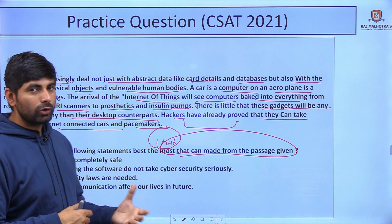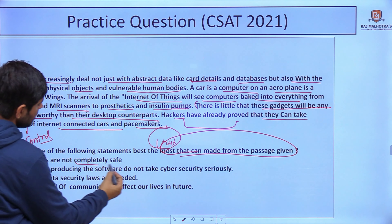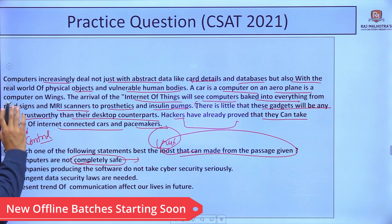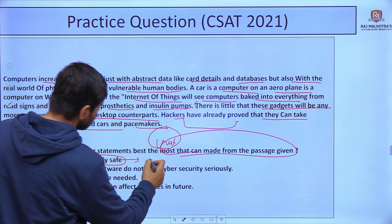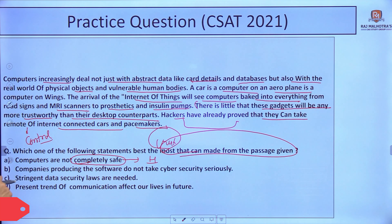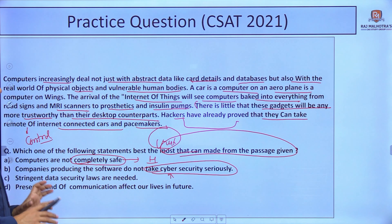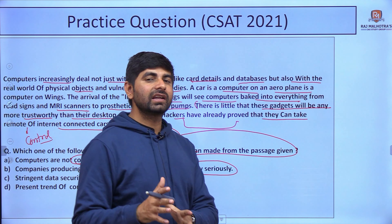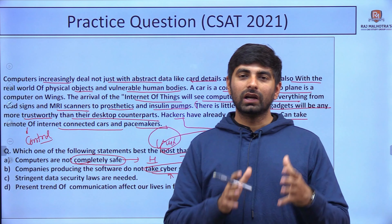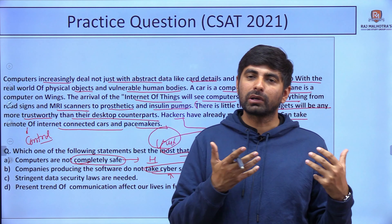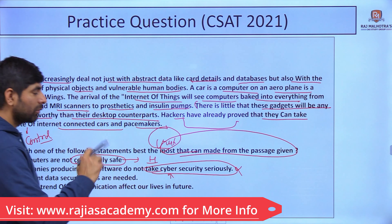We will have four options and will choose the correct statement. Option A: computers are not completely safe — this is information directly given in the passage, so this can be our answer; we will hold it. Option B: companies producing the software do not take cyber security seriously — but there was no mention of companies taking responsibility for cyber security in the passage; we were only discussing the role of computers. So Option B is incorrect.